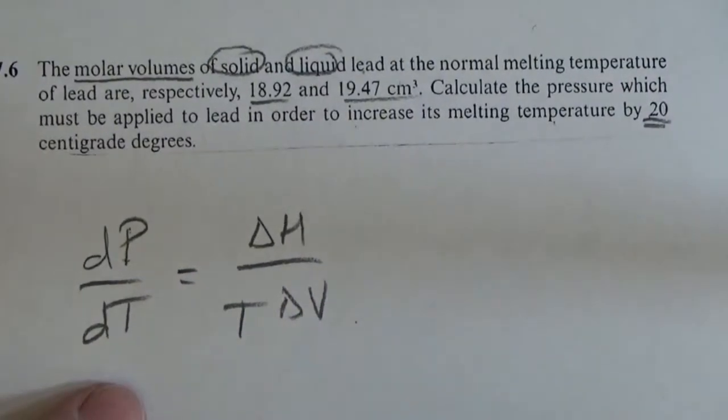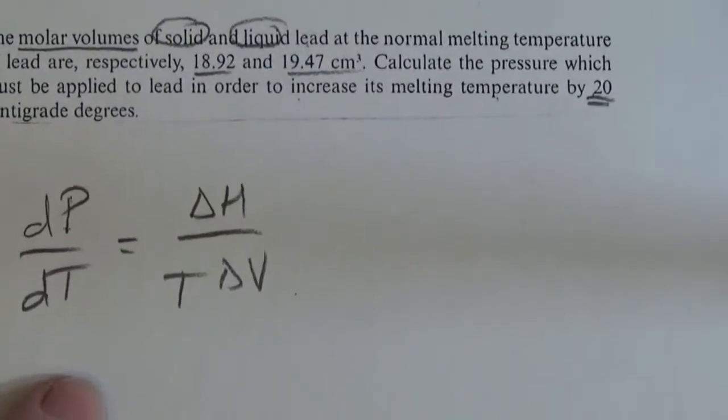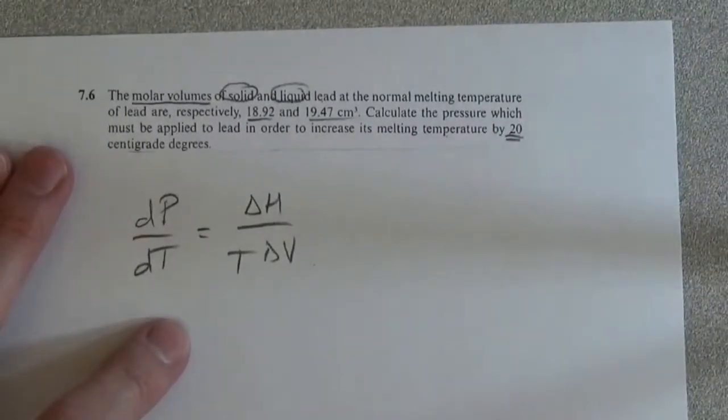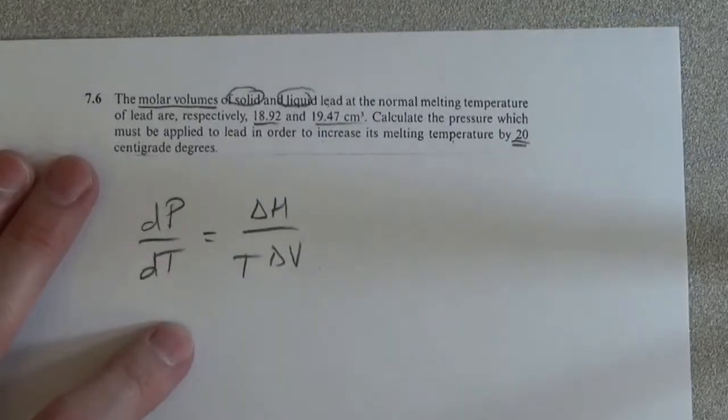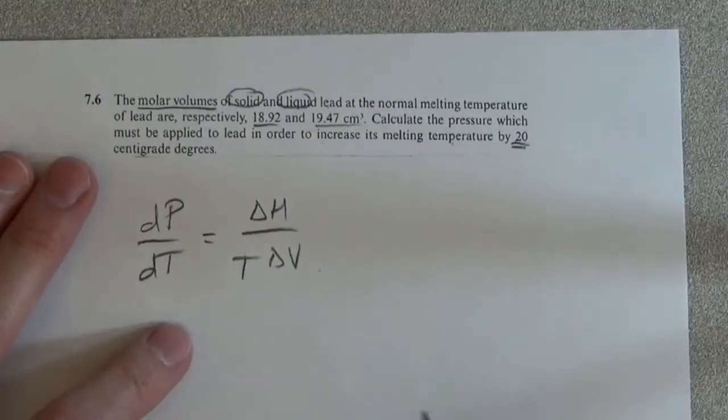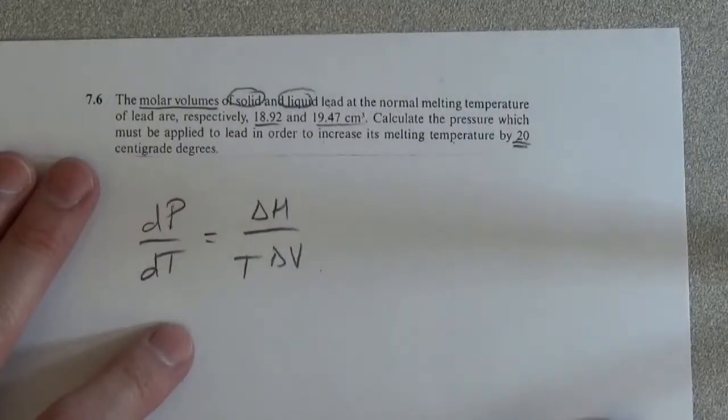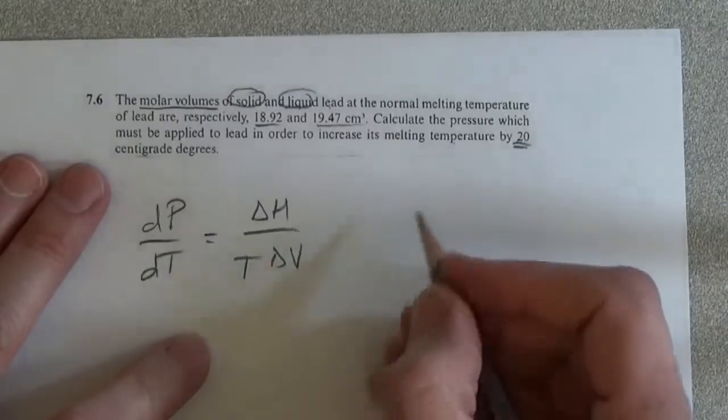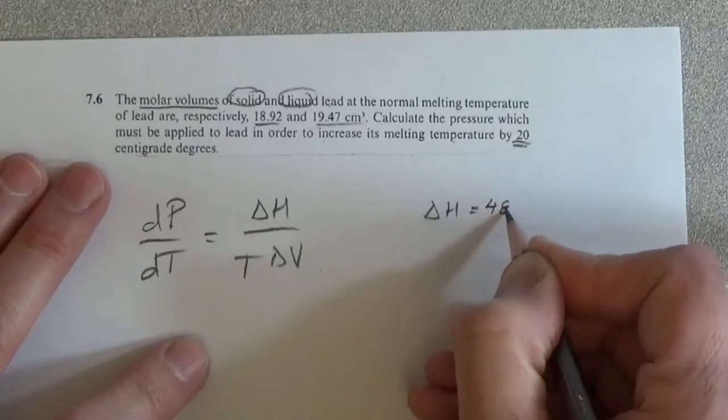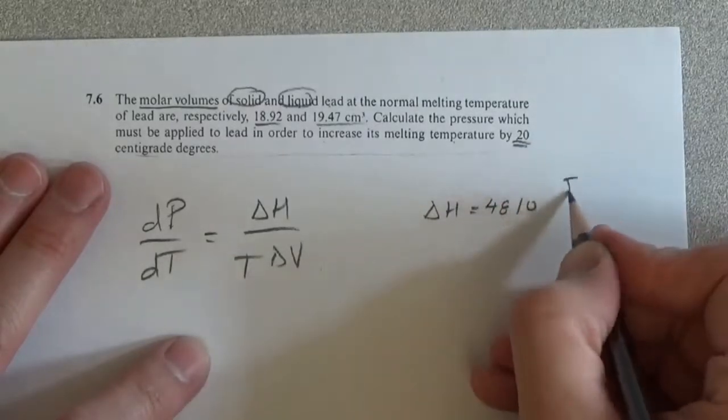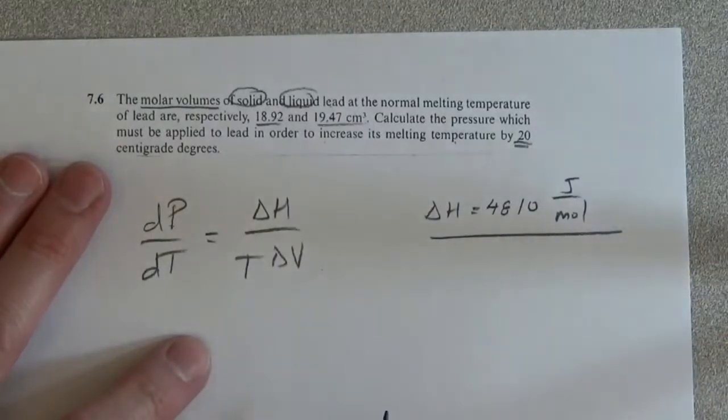So to do this we need to look up some numbers, in particular the latent heat of transformation. So at kind of standard one atmosphere, delta H is equal to 4810 joules per mole, and this is from the table in the back of your textbook.